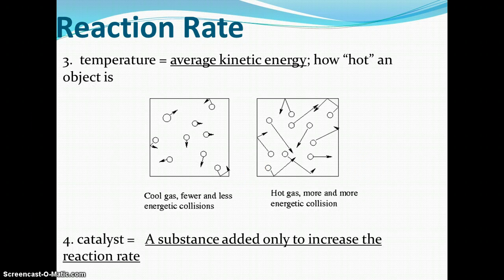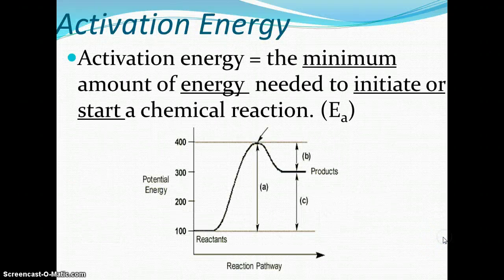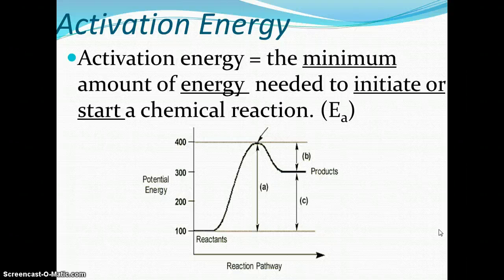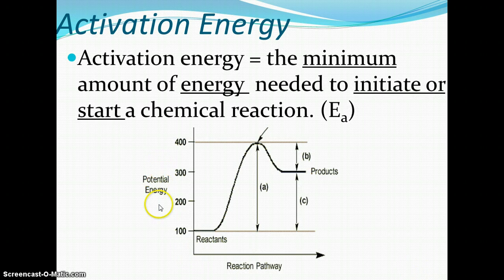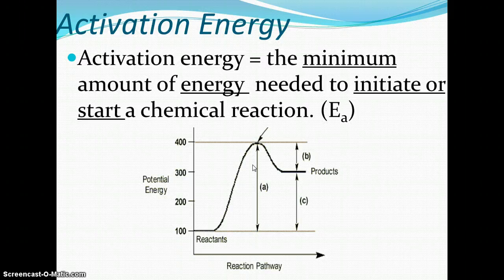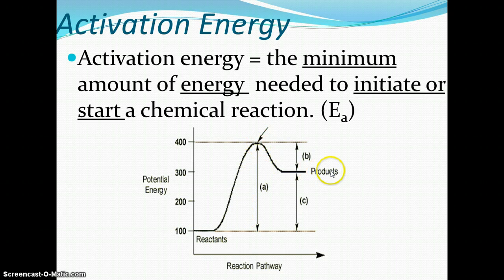Next up are catalysts — substances added only to increase the reaction rate. First, we need to know what activation energy is. Activation energy is the minimum amount of energy needed to initiate or jumpstart a chemical reaction, referred to as E sub A. On the reaction pathway diagram, we have potential energy on the y-axis and reaction pathway on the x-axis, with reactants on the left and products on the right. The difference between the reactants' energy level and the top of the hill is the activation energy. For the reaction to start, the activation energy must be fulfilled — you need enough energy to get over that hill.